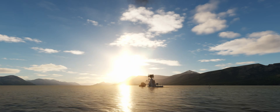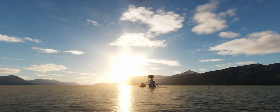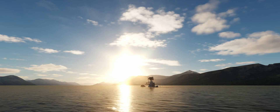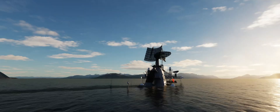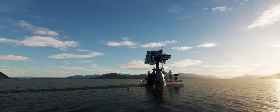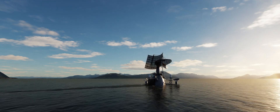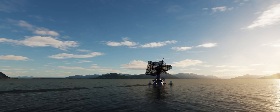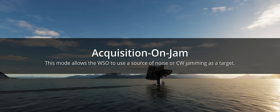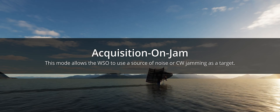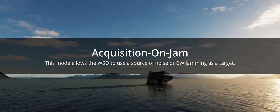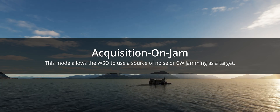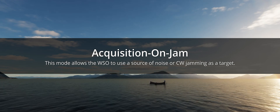During the overview of the radar, I mentioned that a number of sub-modes exist. These modes are more peculiar functions triggered or manually activated only when specific radar modes are selected. The first is AOJ, or Acquisition on Jam. This mode allows the WIZO to use a source of noise or CW jamming as a target. It recalls the JAT mode in the Tomcat, and similarly it allows angle tracking but does not provide range indications.